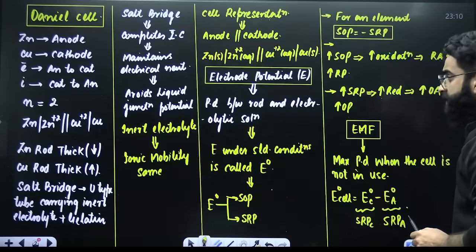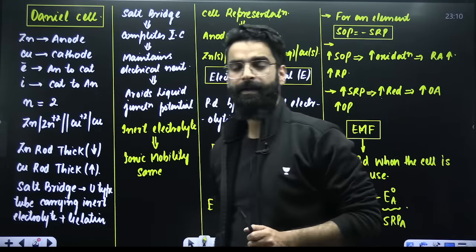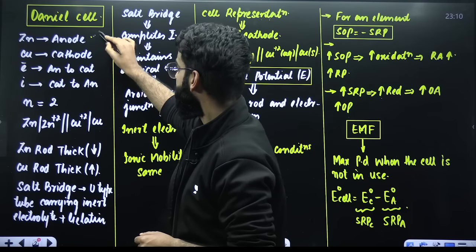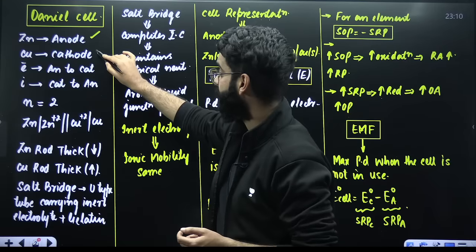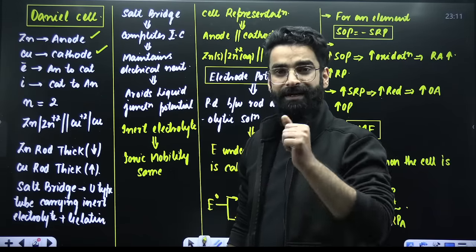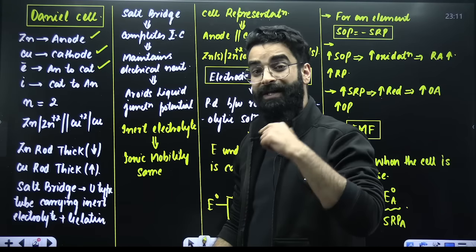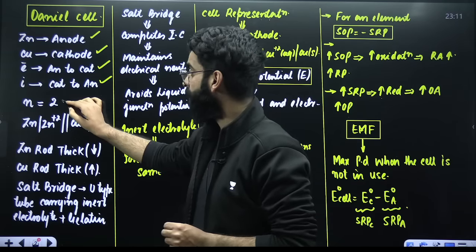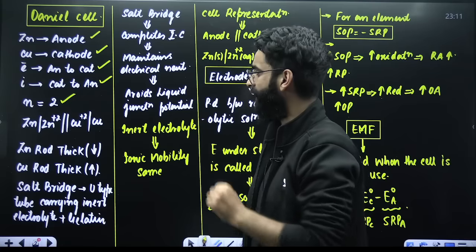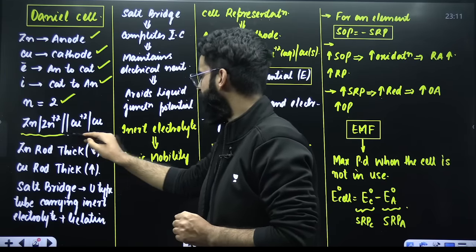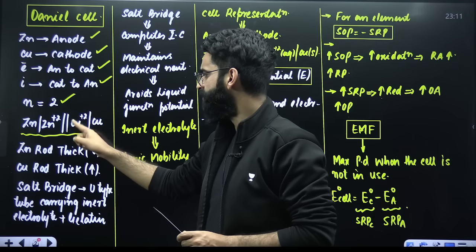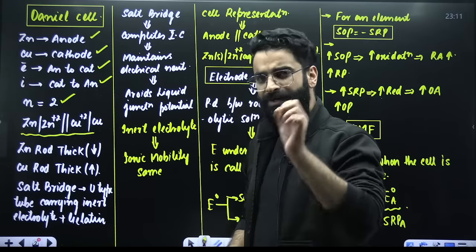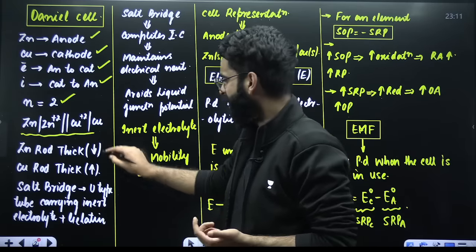The first topic is the Daniel cell. In the Daniel cell we use two electrodes: zinc and copper. Zinc behaves as the anode and copper behaves as the cathode. The movement of electrons is from anode to cathode, while the direction of current is from cathode to anode. In the Daniel cell, two moles of electrons are exchanged between anode and cathode. In the cell representation, the salt bridge is in the middle, the anodic part is on the left, and the cathodic part is on the right.